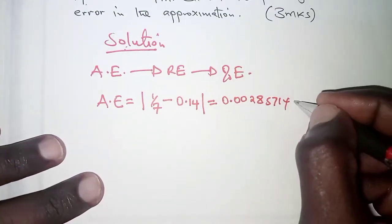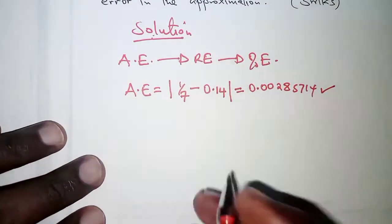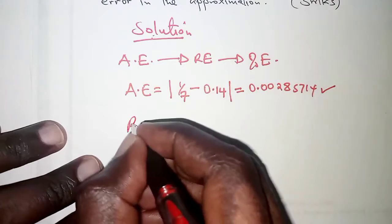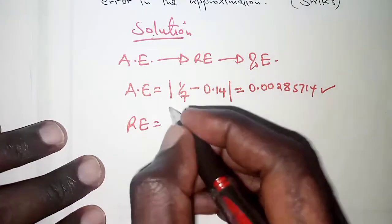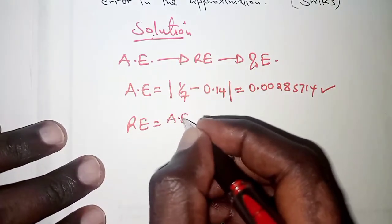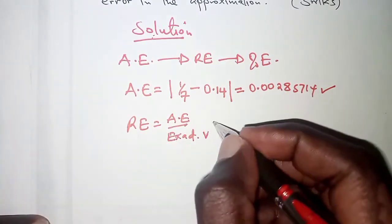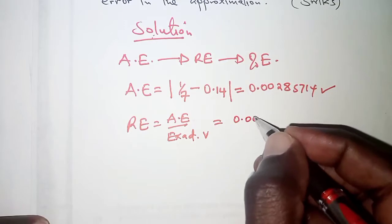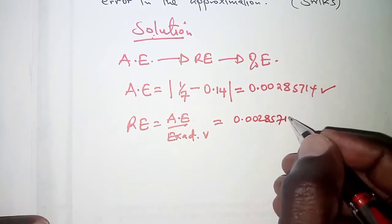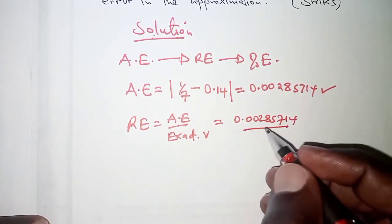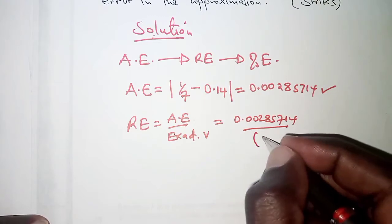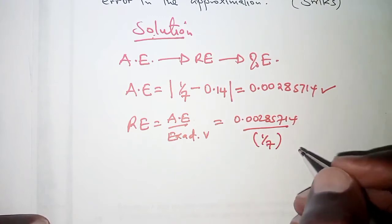And from here, we can now get the relative error. Remember relative error is just absolute error all over the exact value. That is 0.00285714 divided by the exact value, and the exact value is 1 over 7 which was expected.